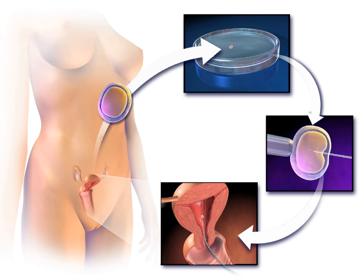In zygote intrafallopian transfer (ZIFT), egg cells are removed from the woman's ovaries and fertilized in the laboratory; the resulting zygote is then placed into the fallopian tube. Cytoplasmic transfer is the technique in which the contents of a fertile egg from a donor are injected into the infertile egg of the patient along with the sperm.